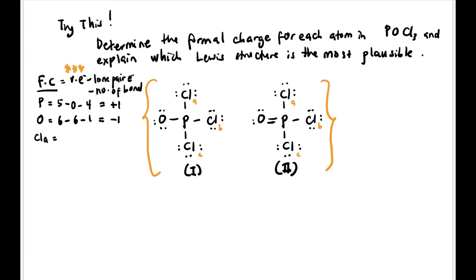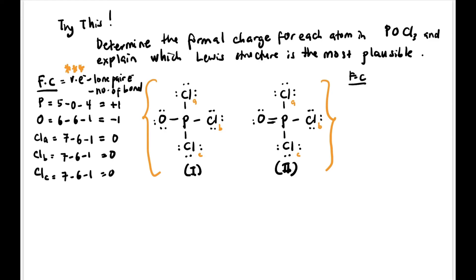Continuing Structure 1 of POCl3: Cl-A — 7 − 6 lone pair − 1 bond = 0. Cl-B and Cl-C are the same, so both = 0. Total formal charge for Structure 1: +1 − 1 + 0 + 0 + 0 = 0, which is correct for a neutral compound.